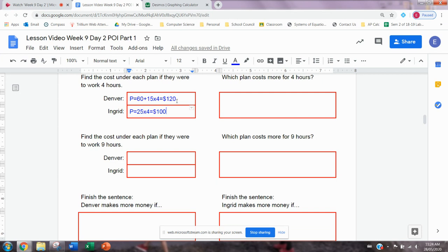So here it says, which one charges more for four hours. And we would say Denver charges more for four hours. We'll do a similar thing down here, find the cost under each plan if they were to work nine hours. So with Denver, his pay equals 60 plus 15 times how many hours. And here his number of hours is nine. We do that math 15 times nine. So make sure you're doing order of operations on your calculator, here is 135 plus the 60 for his initial fee. Denver would charge $195 for nine hours of lawn mowing.